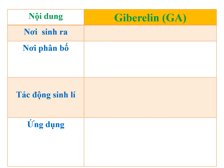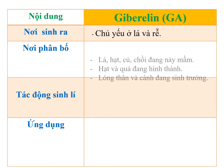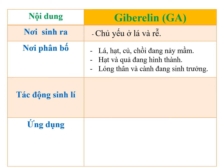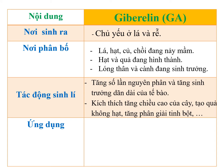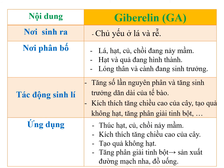Các em cần lưu ý về hốc môn gibberellin: thứ nhất - nơi sinh ra chủ yếu ở lá và rễ; thứ hai - nơi phân bố: gibberellin tồn tại trong lá, hạt, củ, chồi đang nảy mầm, hạt và quả đang hình thành, tồn tại trong lóng thân hay cành đang sinh trưởng. Gibberellin có tác động sinh lý: ở mức tế bào sẽ làm tăng số lần nguyên phân và tăng sinh trưởng giãn dài của tế bào; ở mức cơ thể sẽ kích thích tăng trưởng chiều cao của cây, tạo quả không hạt, hay kích thích phân giải tinh bột. Ứng dụng: thúc hạt, củ hay chồi nảy mầm; kích thích tăng trưởng chiều cao; tạo quả không hạt; sử dụng để tăng quá trình phân giải tinh bột trong sản xuất đường mạch nha hay đồ uống.